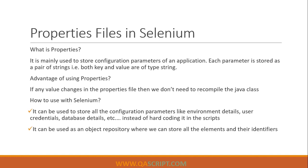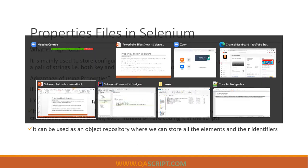Another useful feature of a properties file in an automation framework, especially in Selenium, is it can be used as an object repository. If you want a place to store your elements and their properties, you can use this properties file. You can store all your elements with their identifiers, and then with the help of the properties file you can get whichever element you want at any place in your framework. This is very similar to the Page Object Model but a slightly different concept where you create your own object repository.